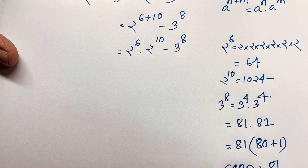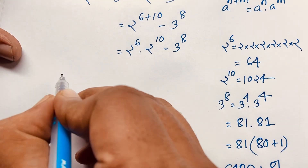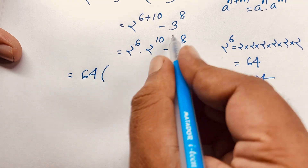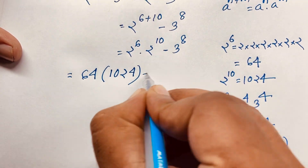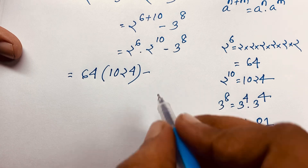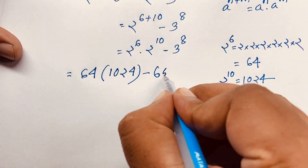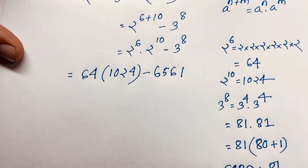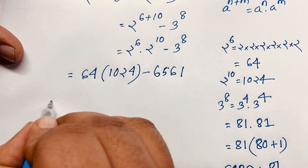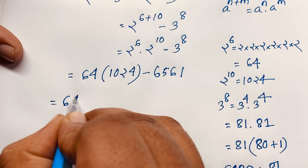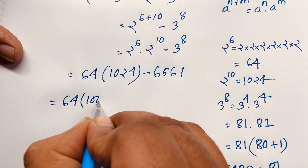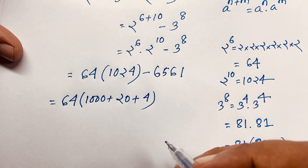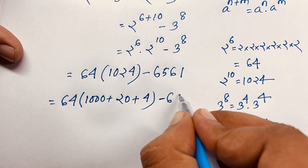Now, putting all these values together: 2 to the power 6 is 64, 2 to the power 10 is 1024, and 3 to the power 8 is 6561. So we have 64 times 1024 minus 6561.